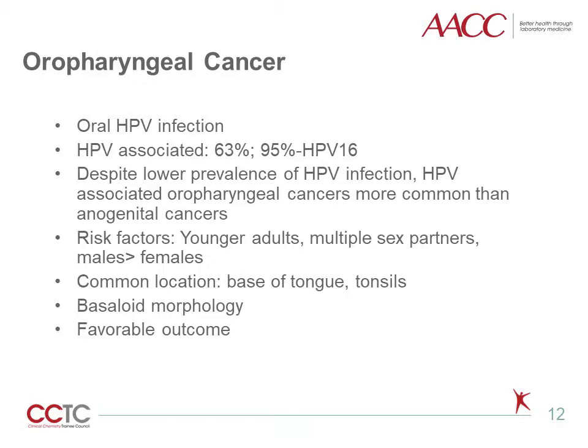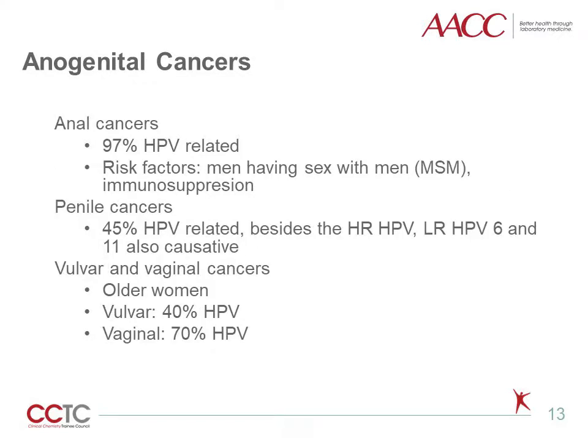These cancers have a predilection for base of tongue and tonsils, frequently show basaloid morphology, and have favorable outcomes versus non-HPV-related cancers. Other HPV-associated cancers occur in the anogenital regions and include anal cancers, penile cancers, and vulvar and vaginal cancers. HPV accounts for 97% of HPV-related anal cancers, occurring more commonly in men having sex with men and immunosuppressed individuals. 45% of penile cancers are caused by HPV, and besides high-risk HPV, low-risk type 6 and 11 are also causative.